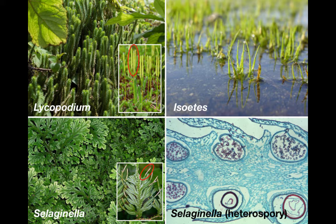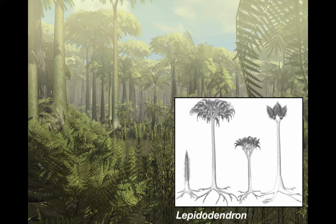Two less common lineages are the quillworts of the genus Isoetes. These are aquatic or semi-aquatic, with long grass-like leaves and short, stocky little stems, and all of the microphylls bear sporangia. The fourth lineage worth mentioning are the lepidodendrids. These are extinct only — arborescent or tree-like — known only from the fossil record, but there are literally tons of fossils.